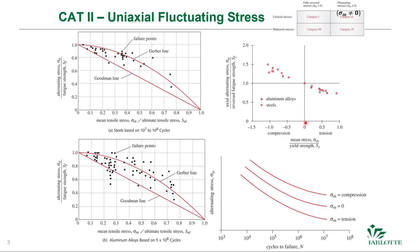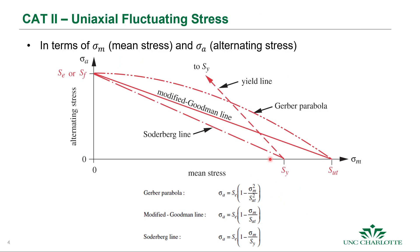A mean tensile stress in the presence of alternating stress reduces fatigue life — the strength goes down. This is also shown in a graph where zero mean stress gives nominal life, mean compression gives improved fatigue life, and mean tension gives reduced fatigue life. For category 2 with uniaxial fluctuating stress, we use the modified Goodman line; expressions for the other lines are given in the text, but for this class we'll use the modified Goodman line.